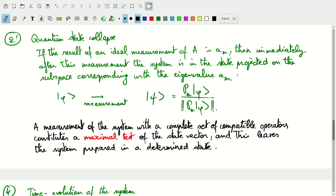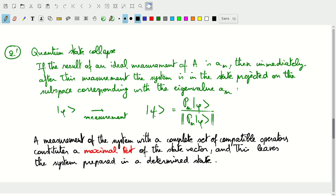So one of the modifications of the second postulate, or one of the follow-ups of the second postulate, is the quantum state collapse or the wave function collapse postulate.